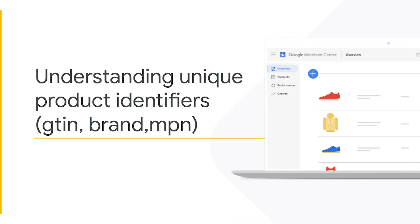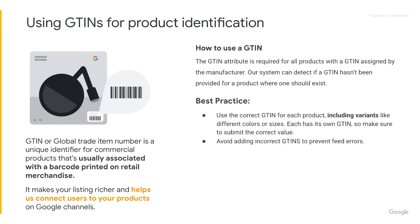Understanding unique product identifiers such as GTIN, brand, and MPN. A GTIN is a unique identifier for commercial products that's usually associated with a barcode printed on retail merchandise. It makes your listings richer and helps us connect users to your products on Google channels. The GTIN attribute is required for all products with a GTIN assigned by the manufacturer. Our system is able to detect if a GTIN hasn't been provided for a product where one should exist, and if it's not provided, your products will be disapproved.